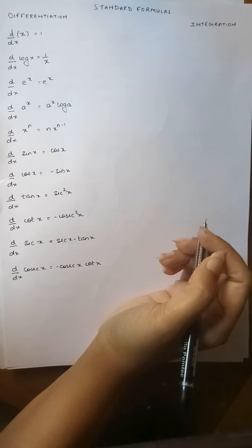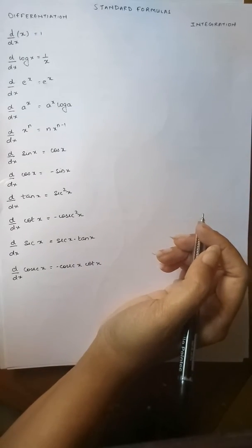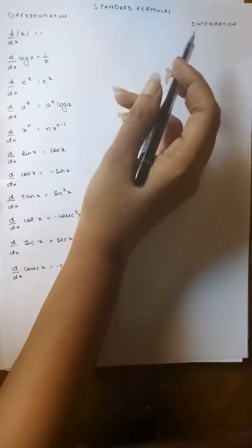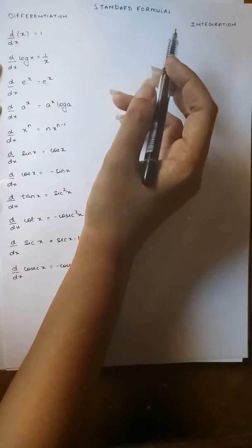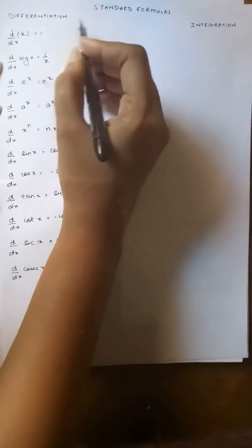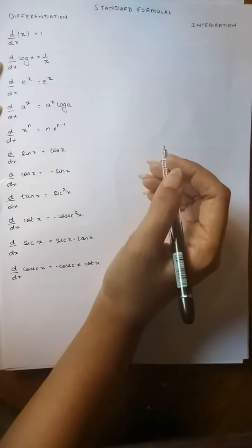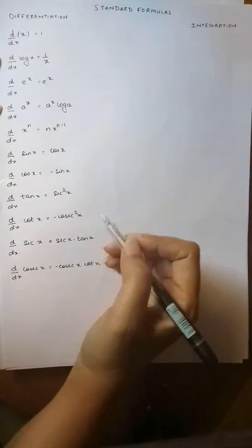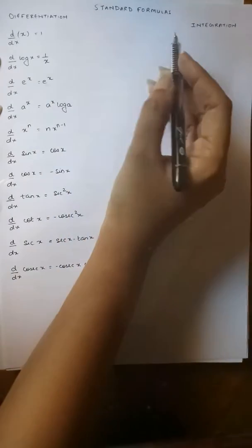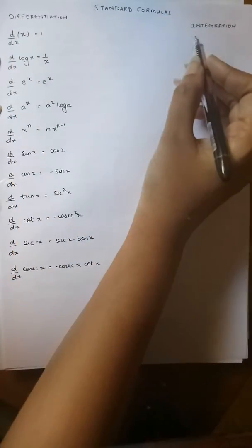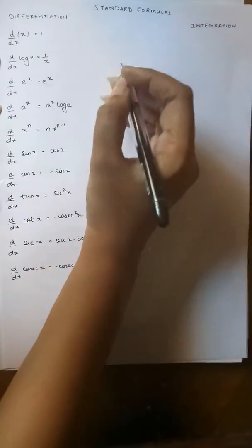Hello everyone. In this video I'm going to show you the correlation between the standard formula of differentiation and integration. As many of us know, differentiation and integration are exact opposites of each other, and this is more or less true. Basically when I say they're exact opposites, it means the answer over here becomes a question over there, and the question over here becomes the answer over here.